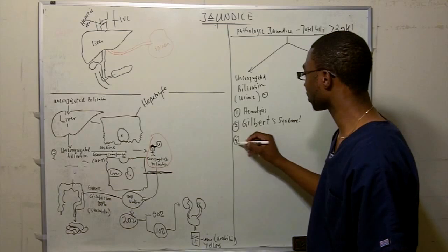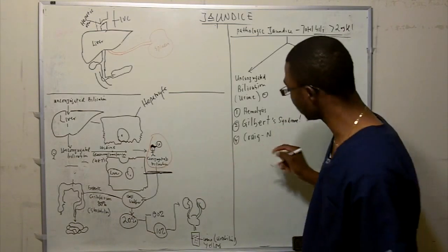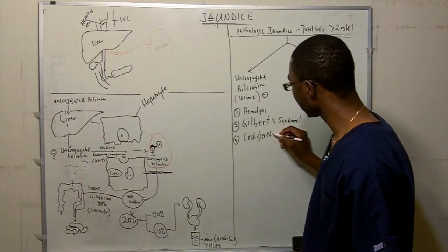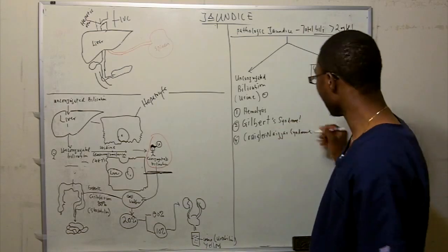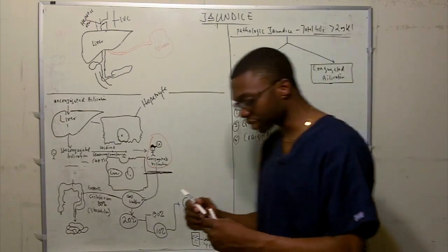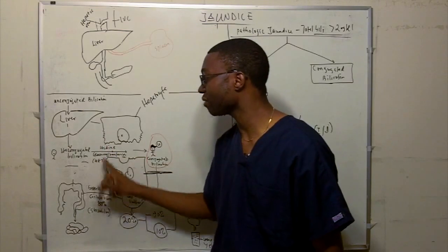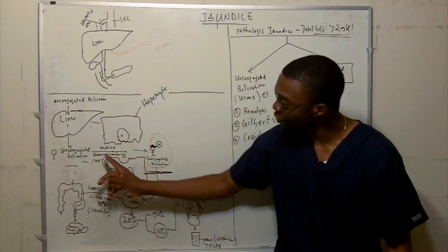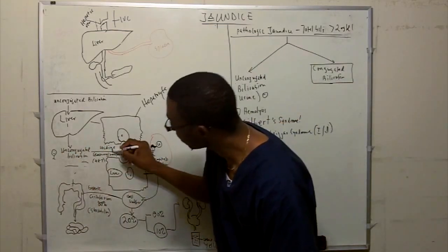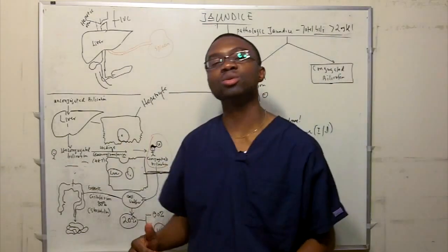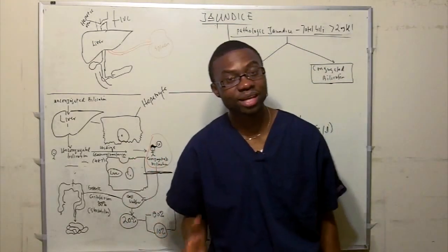Another cause is Crigler-Najjar syndrome, types 1 and 2. These patients are missing uridine glucuronosyltransferase (UGT). Without this enzyme, unconjugated bilirubin cannot be conjugated in the liver — it gets blocked, everything backs up, and you get a large buildup of unconjugated bilirubin. This is a genetic defect — they're simply missing the enzyme.